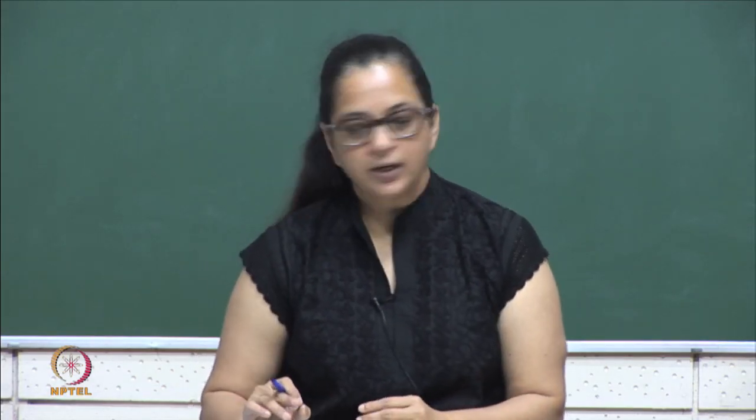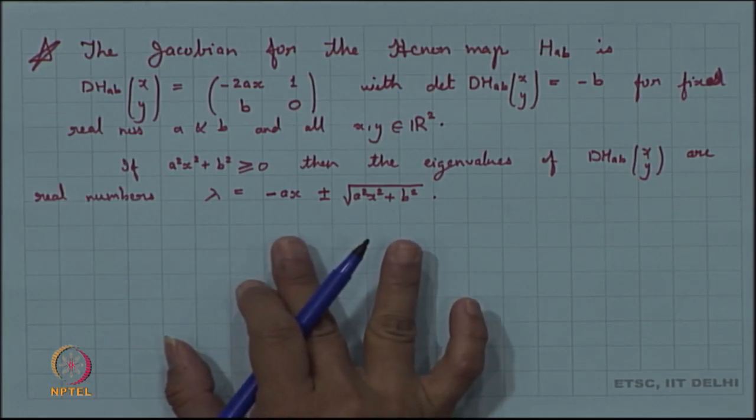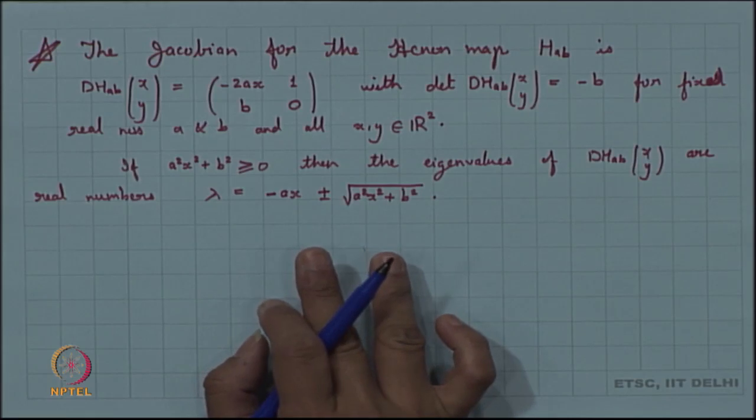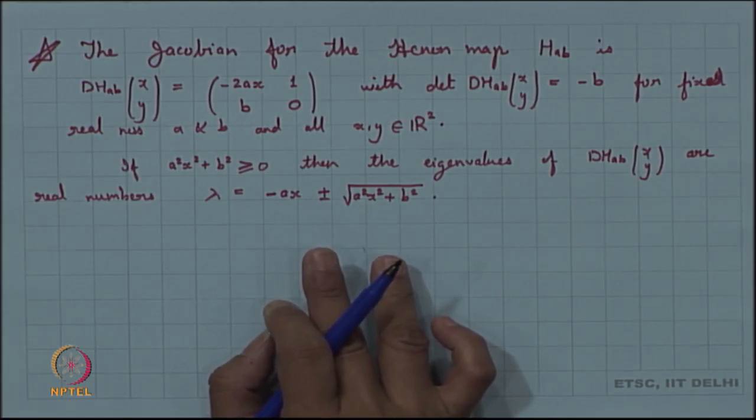Whenever a²x² + b² ≥ 0, the Jacobian has real eigenvalues. The Jacobian tells us what is the action of the map at that point — it is basically the differential map. The eigenvalues are very important because they tell us the directions where the action is preserved, helping us understand the local dynamics.